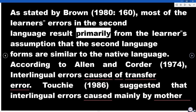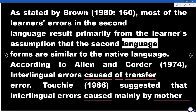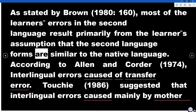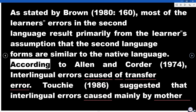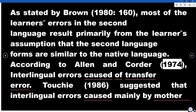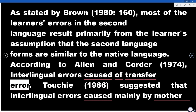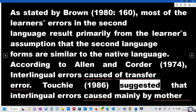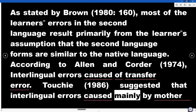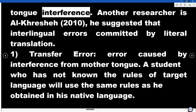Interlingual errors in language result primarily from the learner's assumption that the second language forms are similar to the native language. According to Allen and Corder (1974), interlingual errors are caused by transfer error. Tucci (1986) suggested that interlingual errors are caused mainly by mother tongue interference.